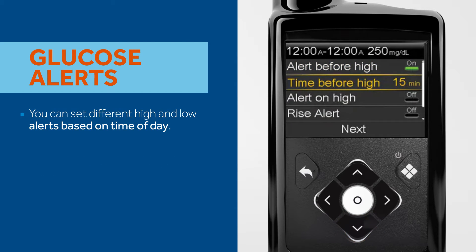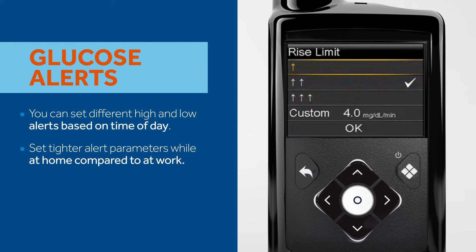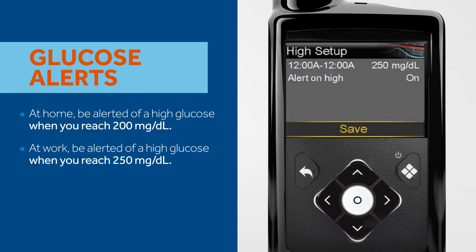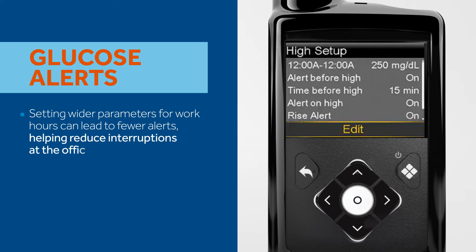You can set different high and low alerts based on time of day. For example, some will set tighter alert parameters while at home compared to when they are at work. At home you may want to be alerted of a high glucose when you reach 200 milligrams per deciliter; at the office, when you reach 250 milligrams per deciliter. Setting wider parameters for work hours can lead to fewer alerts, helping reduce interruptions at the office.